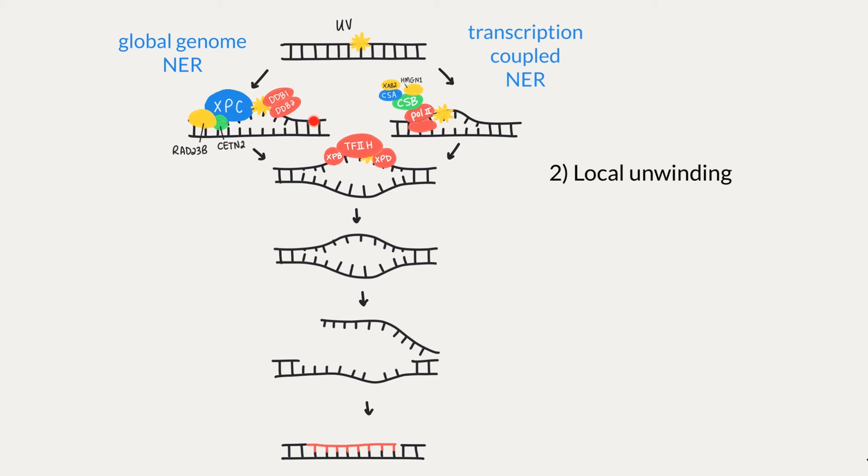Transcription initiation factor 2H is a transcription initiation complex that comprises of 10 proteins, two of which are ATPases or helicases called XPB and XPD which unwind the DNA to create a 20-30 nucleotide bubble.